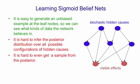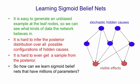It's hard even to get a sample from the posterior, which is what we need if we're going to do stochastic gradient descent. So given this difficulty in sampling from the posterior, it's hard to see how we can learn sigmoid belief nets with millions of parameters, which is what we'd like to do.